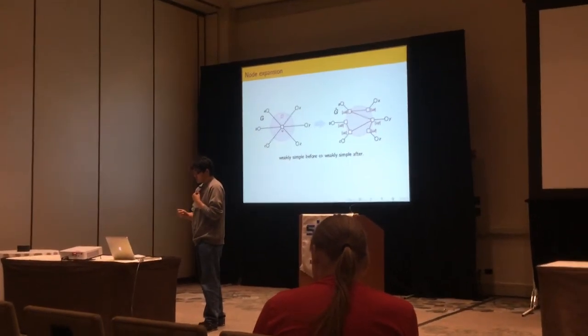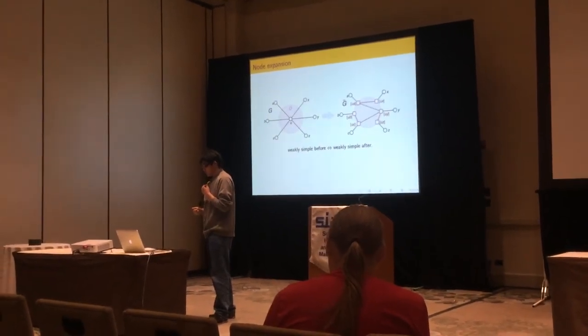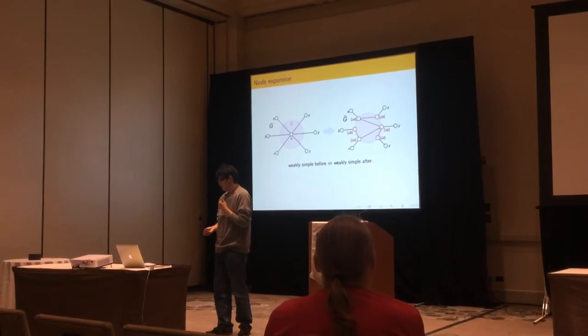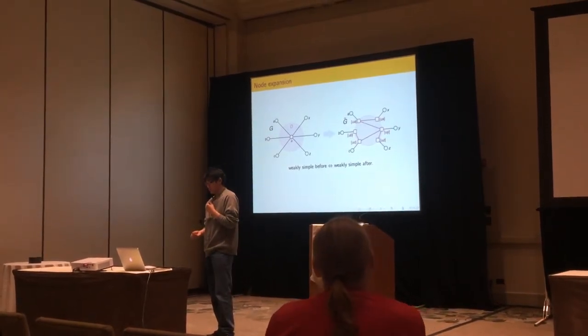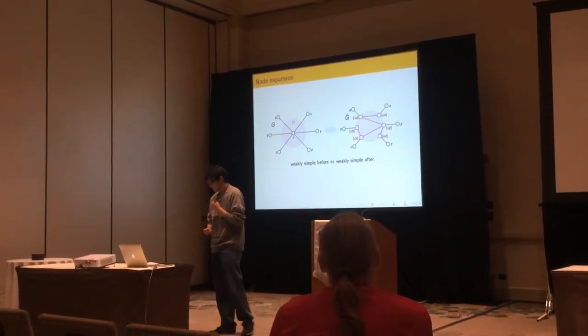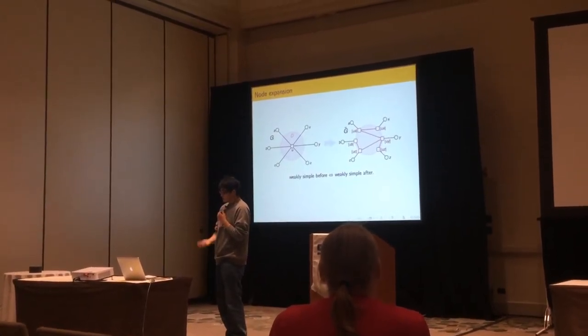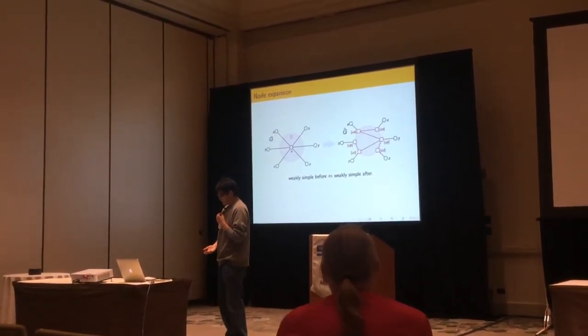So if the original polygon is weakly simple, then the one after node expansion is also weakly simple. And the converse is also true.